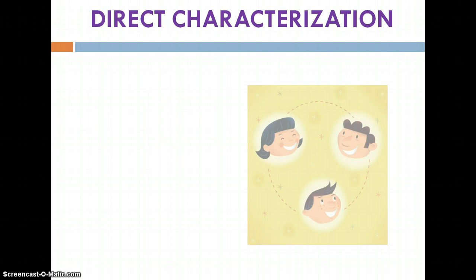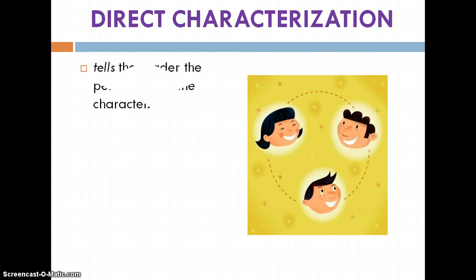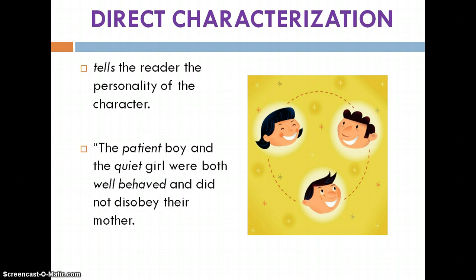Direct characterization is when the author is just telling you the personality — telling you the characteristic traits. If they said, 'The patient boy and the quiet girl were both well-behaved and did not disobey their mother,' that author is characterizing them as patient, quiet, and well-behaved. You don't have to guess at their actions; the author is using those words and directly telling you.